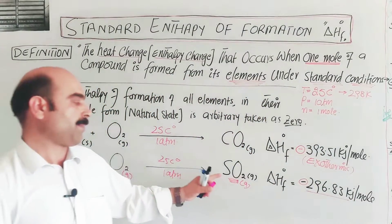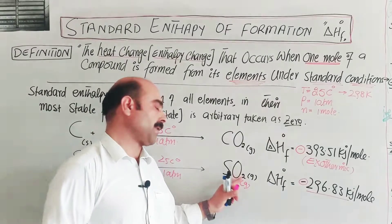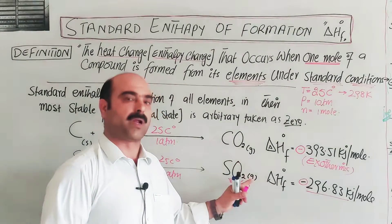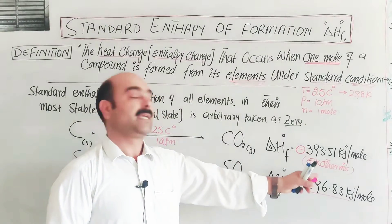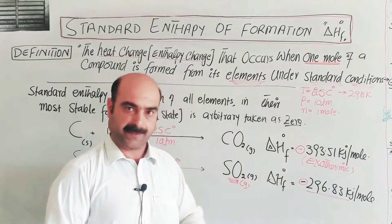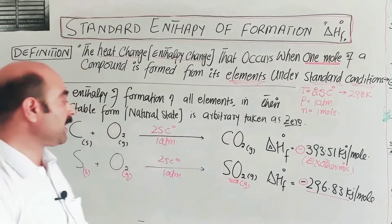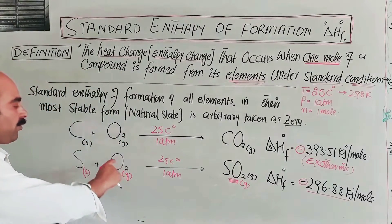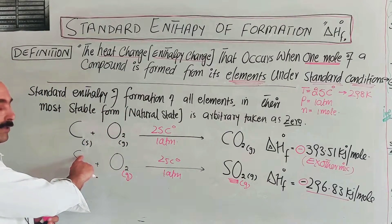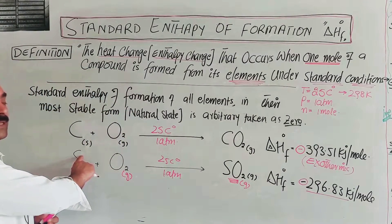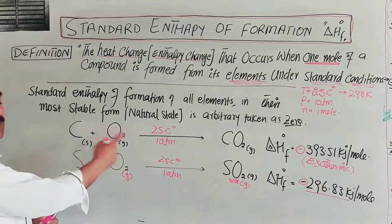So, the enthalpy of formation of one mole of sulfur dioxide is known. This also illustrates that for allotropes like sulfur, we must use the most stable form — rhombic sulfur rather than monoclinic sulfur — when writing formation reactions under standard conditions.